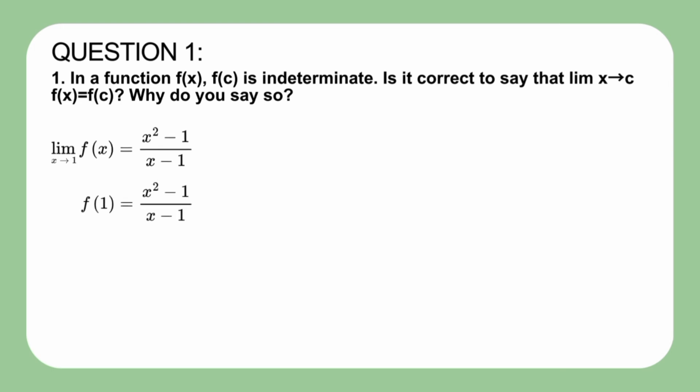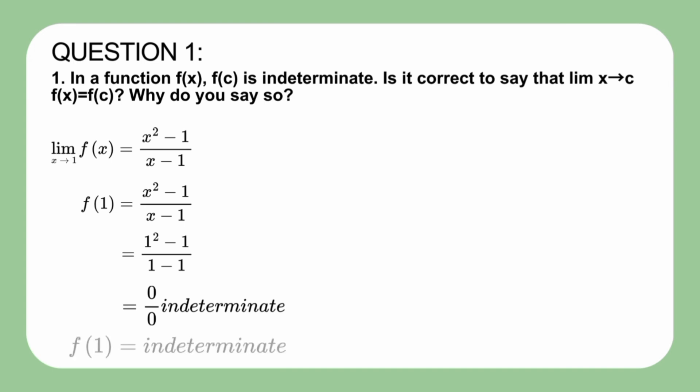If we attempt to substitute x equal to 1, we encounter an indeterminate form 0 over 0, because our numerator and denominator are both 0, and f of 1 becomes indeterminate. However, this doesn't mean that the limit of f of x as x approaches 1 is also indeterminate.